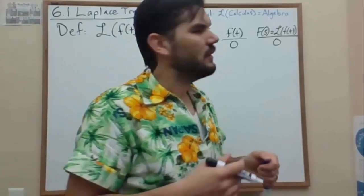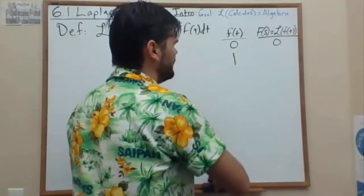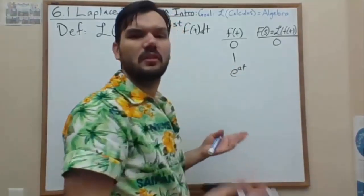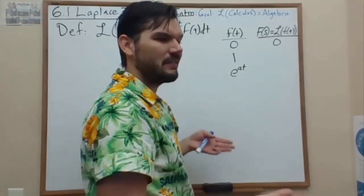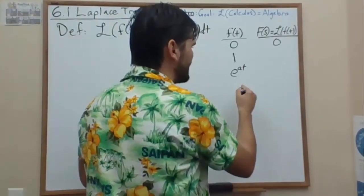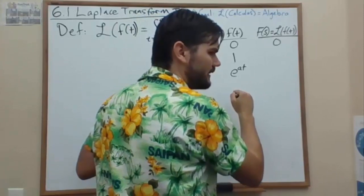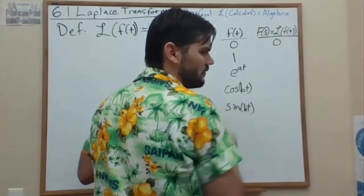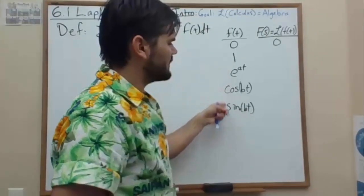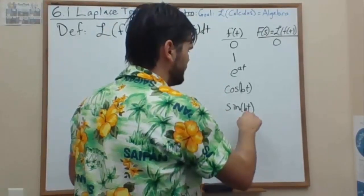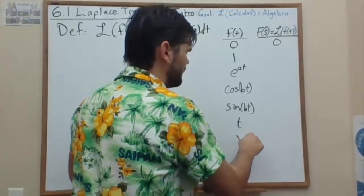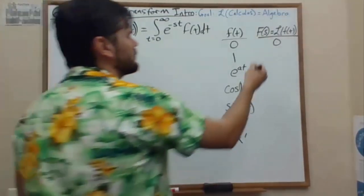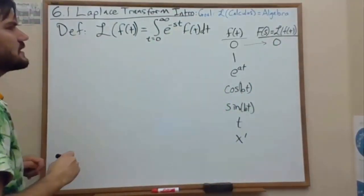Some of the other basic functions we'll be looking at are transforming just the constant one, then all possible real exponentials. And then once we have the real exponentials, we'll break them up into complex exponentials and write down our sine and cosine. After that, we can look at some other variables like t and x prime.